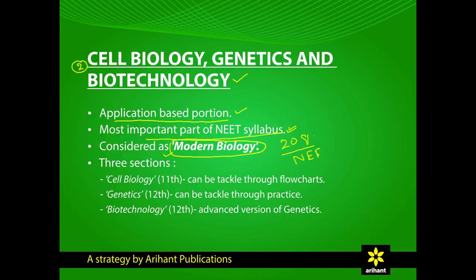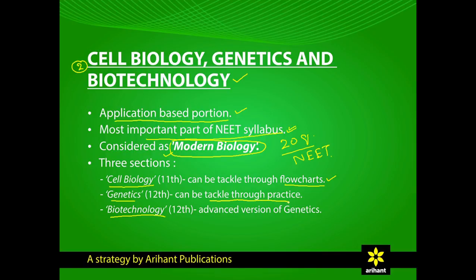The three main groups of this section are: A. Cell Biology, B. Genetics, and C. Biotechnology. Cell biology helps to understand life at the molecular level, and flowcharts play an important role in visualizing ultra structures. Genetics can be made strong only through practice, and can predict characteristics of offspring using a few principles. Biotechnology is an advanced version of genetics.